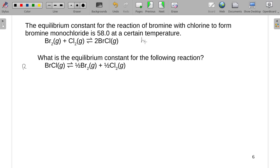So what we want to do is figure out what we're going to do with this K, which is 58.0, to turn it into this one. We know reversing it causes us to put a negative right there, because that reverses the products and reactants. But since we're going to divide all of our coefficients by two, we're going to raise this to the negative one-half.